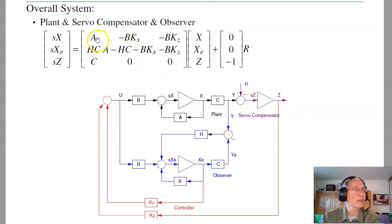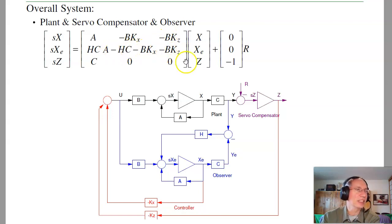I'll use exactly the same observer. The observer doesn't care how you came up with the feedback control law. Forming the augmented system: plant states x, state estimator states, and servo compensator state z. The closed-loop A matrix becomes [A, 0, 0; HC, A - HC - BK_x, -BK_z; C, -C, 0] — essentially whatever you do to the plant, do the same to the observer, which is why the -BK_z terms appear in both rows.